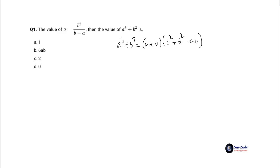And simplifying the given expression we get, a squared plus b squared minus ab equals 0. So a cubed plus b cubed equals 0. Option d, 0.